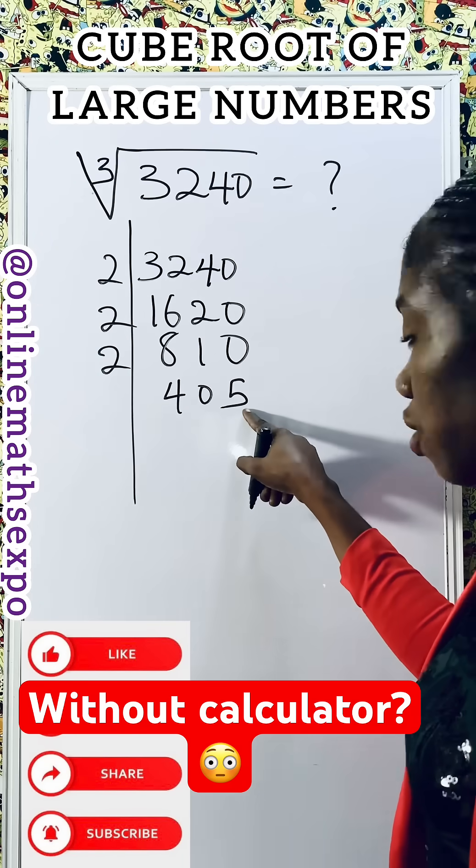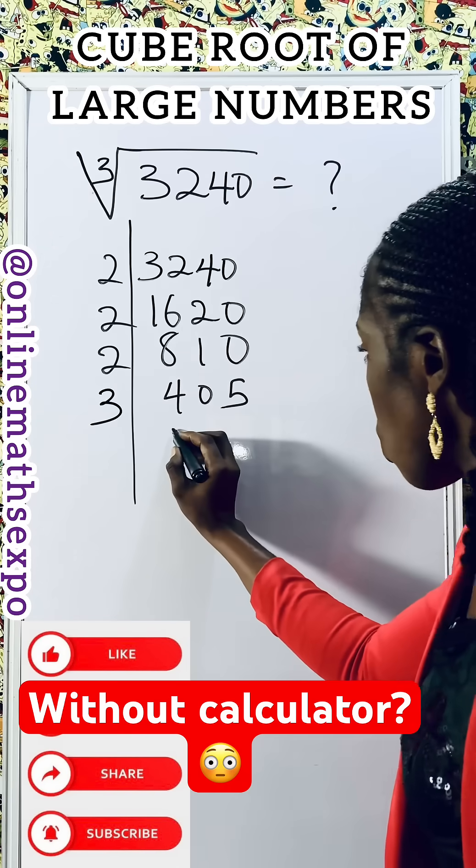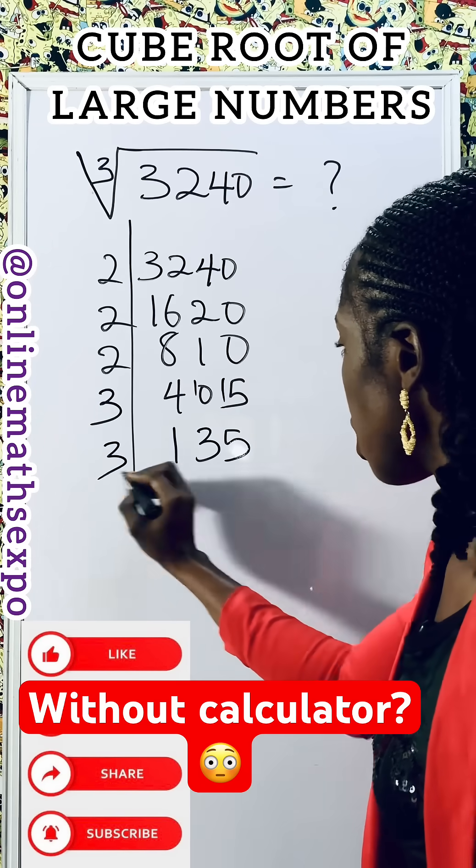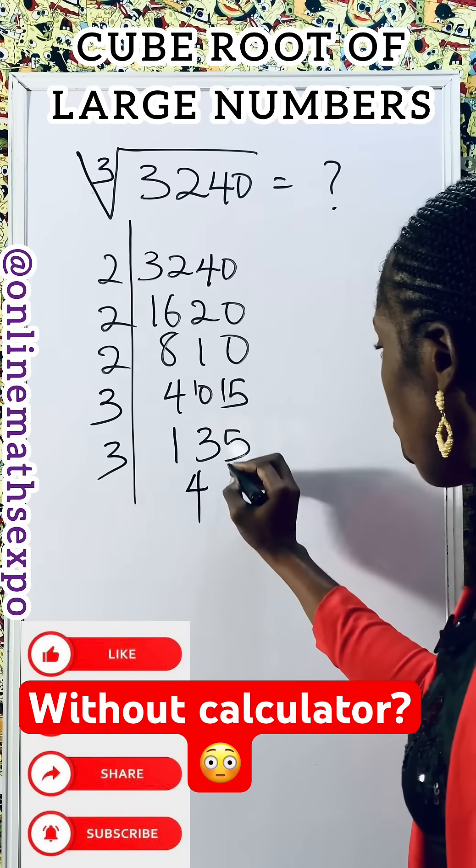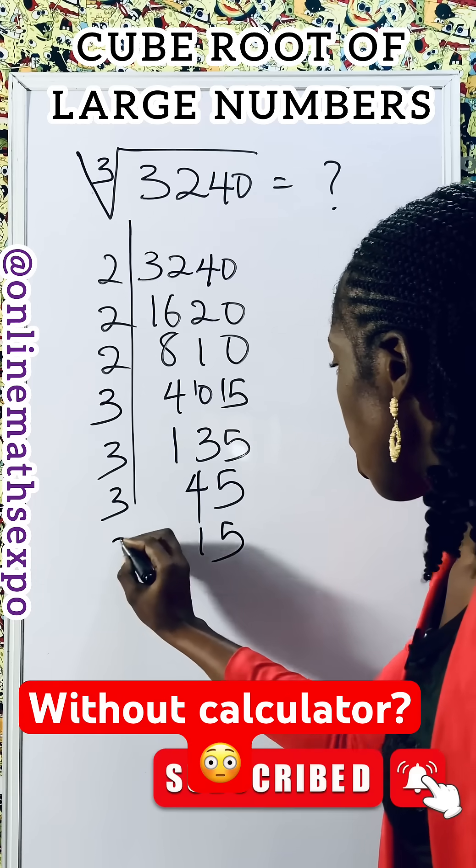If you add the digits, it gives you nine, so three can divide. Three goes into 405 giving 135. Three goes into 135 giving 45. Three goes into 45 giving 15. Three goes into 15 giving 5, and five itself is prime.